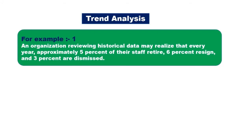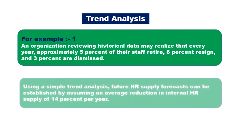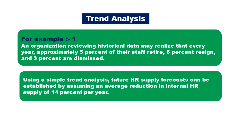For example, an organisation reviewing historical data may realise that every year approximately 5% of their staff retire, 6% resign, and 3% are dismissed. So using a simple trend analysis, future HR supply forecast can be established by assuming an average reduction of internal HR supply of 14% per year.